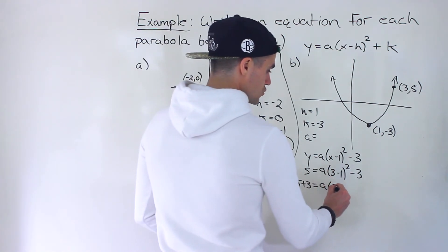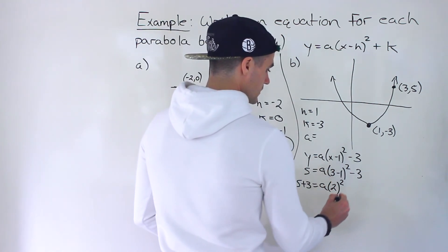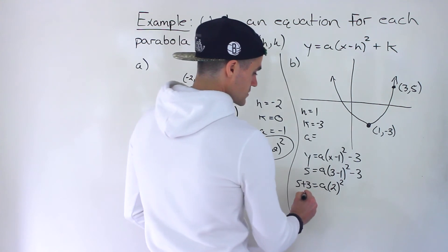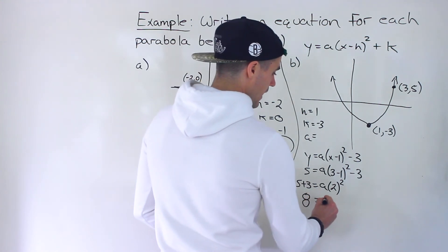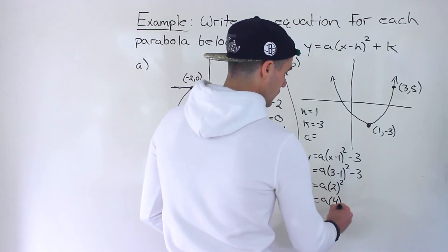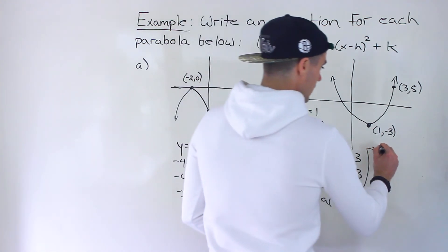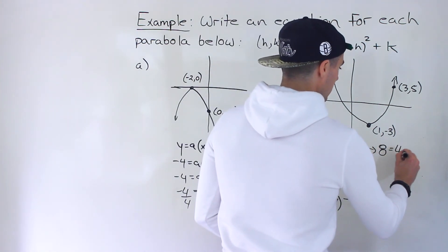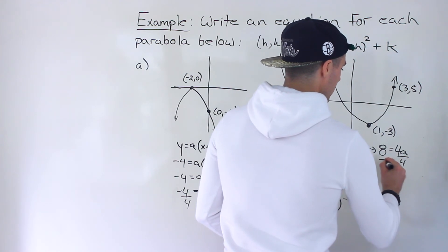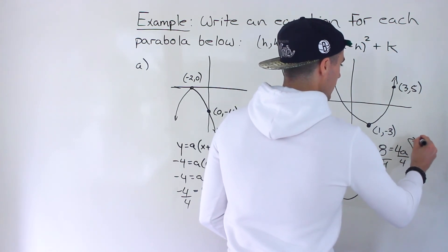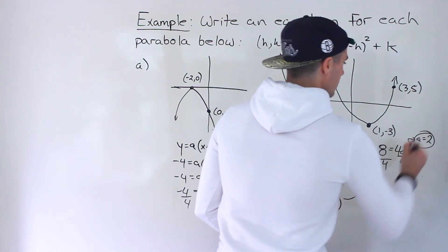Three minus one gives us two. Still got to the power of two. Five plus three gives us eight a. Two to the power of two gives us four. So we end up with four a or eight equaling four a. Divide by four. A value ends up being two.